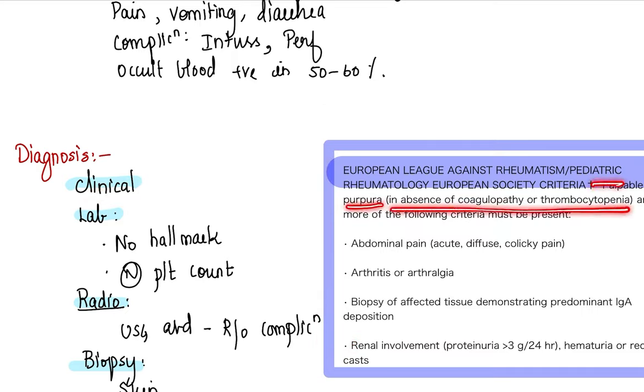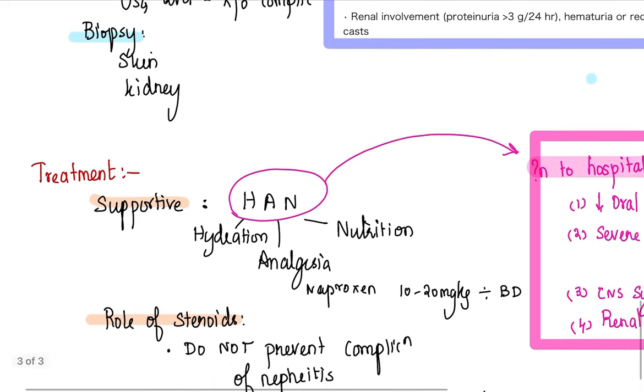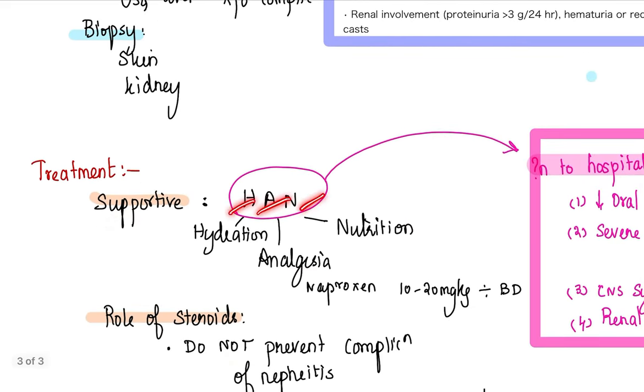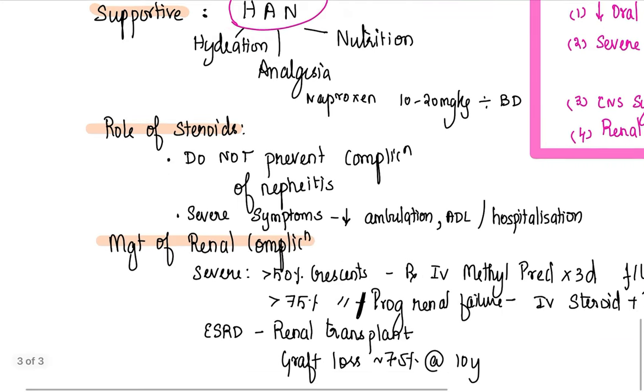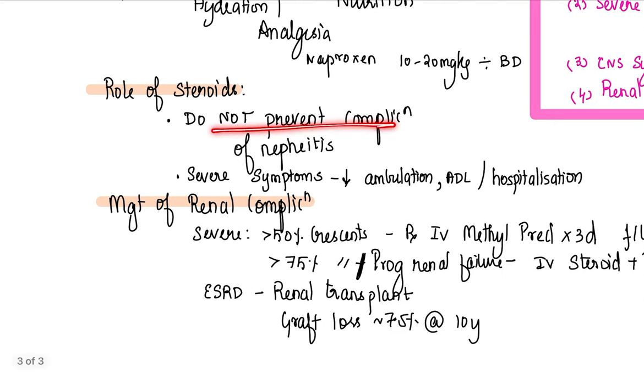It's a clinical diagnosis using this criteria. The important criteria is palpable purpura in the absence of coagulopathy and thrombocytopenia. Treatment is mainly supportive with hydration, analgesia, and nutrition.